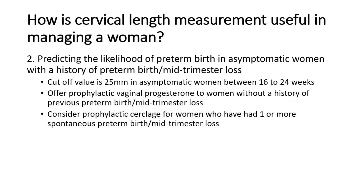Second, cervical length can predict the likelihood of preterm birth in asymptomatic women with a history of preterm birth or mid-trimester loss. The cutoff value is 25mm in asymptomatic women between 16–24 weeks. Offer prophylactic vaginal progesterone to women without a history of previous preterm birth or mid-trimester loss, and consider prophylactic cerclage for women who have had one or more spontaneous preterm births or mid-trimester losses.